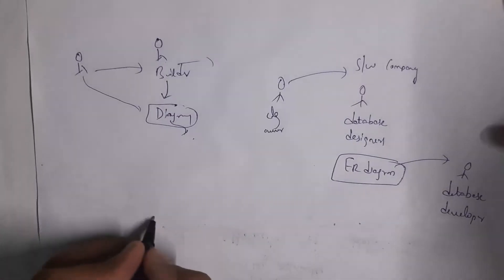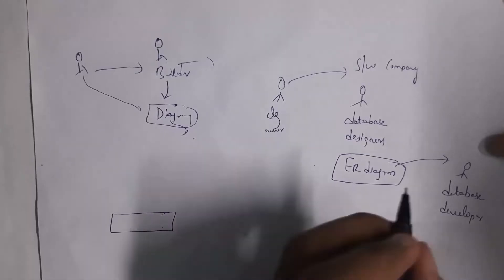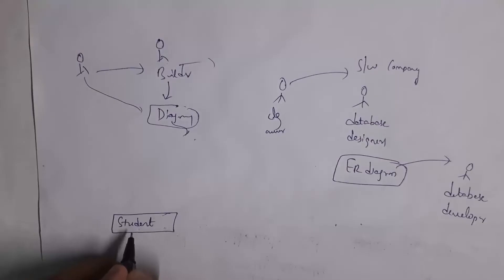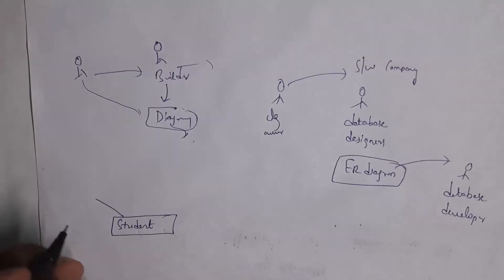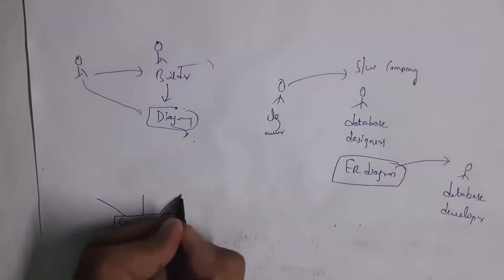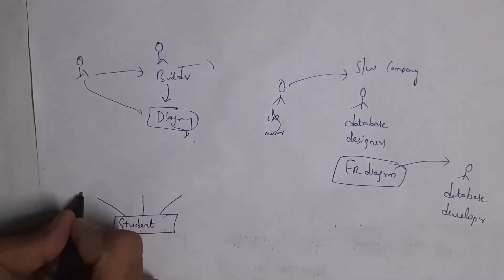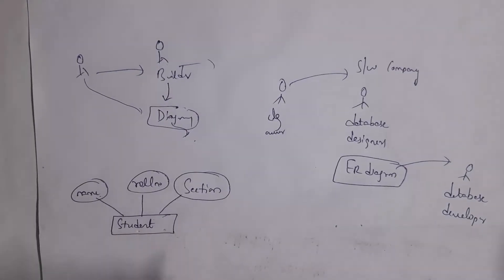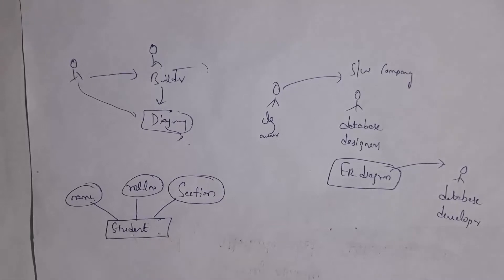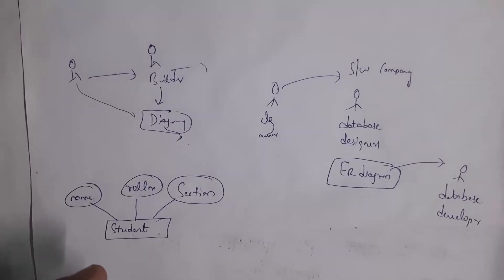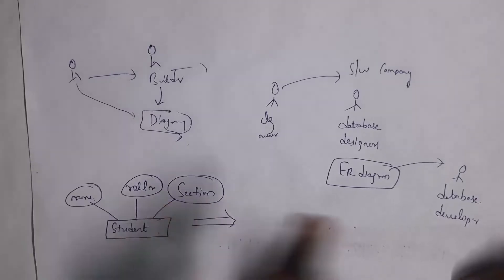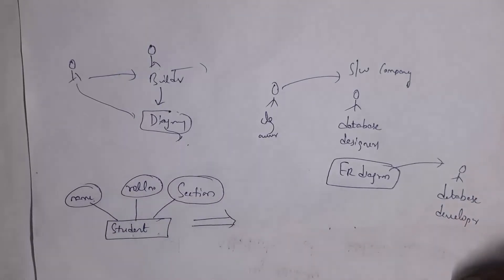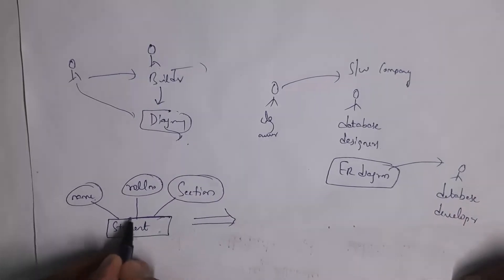For example, this is my simple ER diagram which is created by the database designer. Student is an entity — we will represent entity in a rectangle. Students contain some properties like name, roll number and section, and we call these properties as attributes. We represent attributes in ellipse. By seeing this diagram, the database developer will design one table. Entity is nothing but a table name.